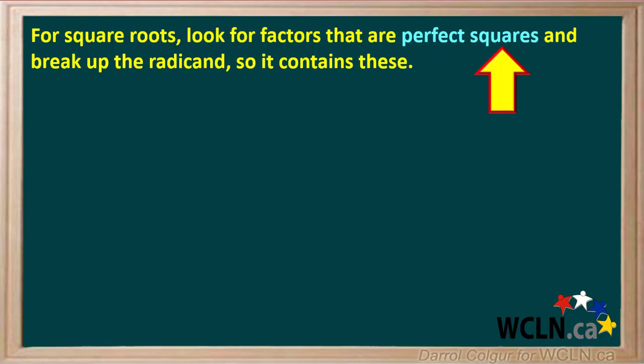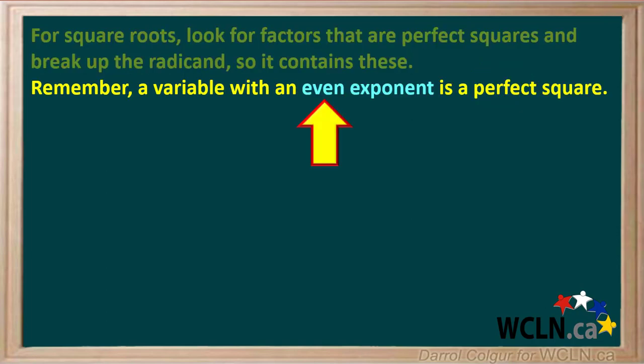For square roots, look for factors that are perfect squares and break up the radicand so it contains these. Remember, a variable with an even exponent is a perfect square.